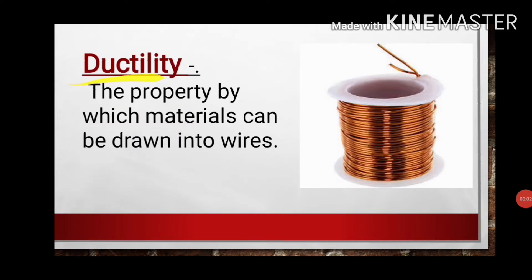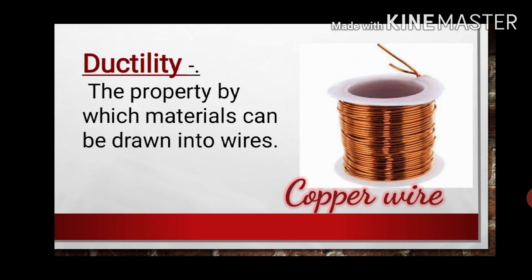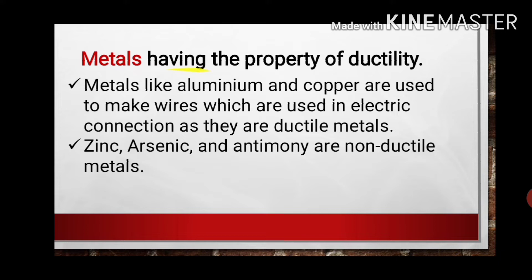The next physical property is ductility, by which metals and non-metals can be distinguished. Ductility is the property by which materials can be drawn into wires. As you can see the copper wire — copper has the property of ductility, which is why it can be converted into copper wire. Copper is an example of a metal, confirming that metals have the property of ductility. This is why metals like aluminum and copper are used for making electrical wires, as they are ductile metals.